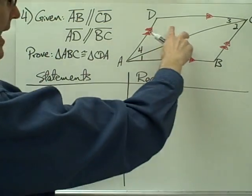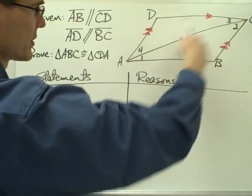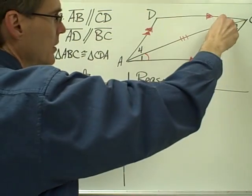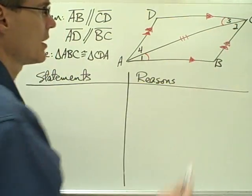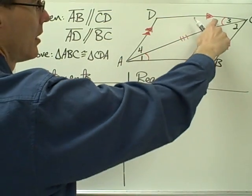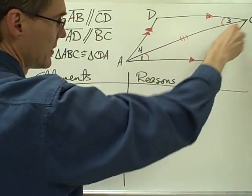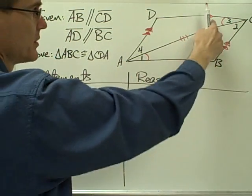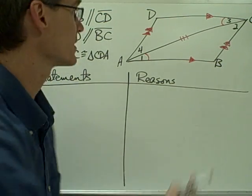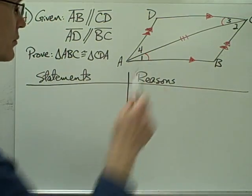If I look at this first pair of parallel lines and treat this line as my transversal, I can see that angle number one and angle number three are going to be congruent because angle one and angle three are alternate interior angles. I have a theorem called the alternate interior angles theorem that tells me if two parallel lines are cut by a transversal, alternate interior angles are congruent.